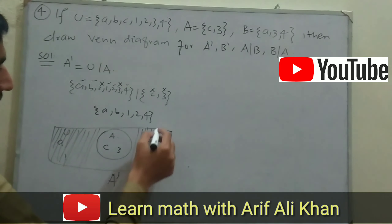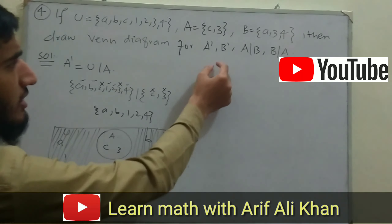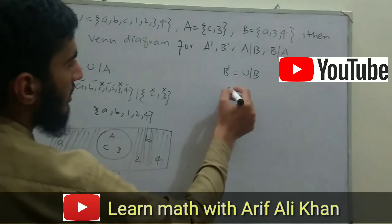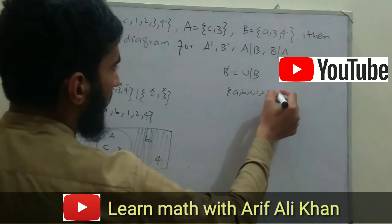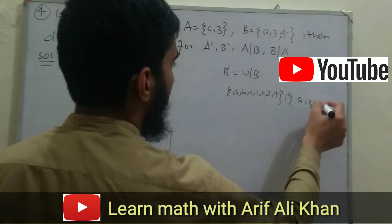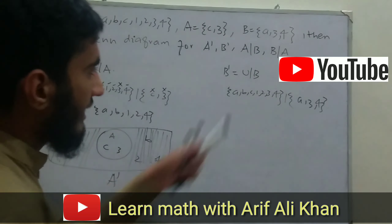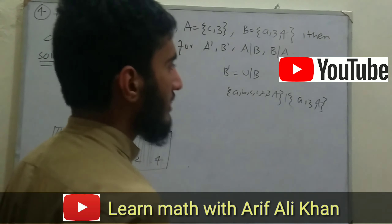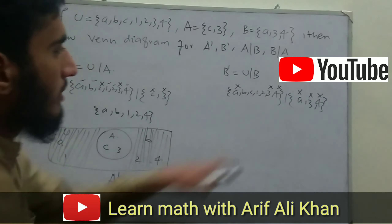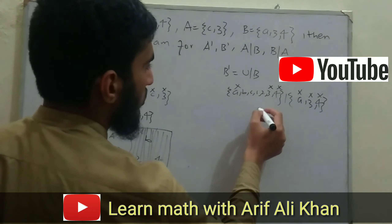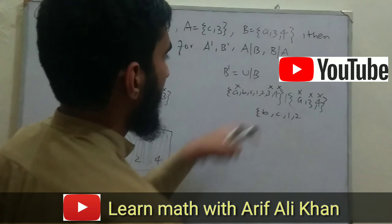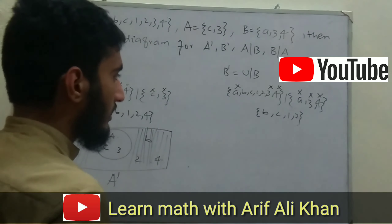Now we find B complement. B complement = U - B. Our U = {A,B,C,1,2,3,4} minus B = {A,3,4}. The common elements A and 3 are in both sets, so we ignore them. The elements remaining in U that are not in B give us B complement = {B, C, 1, 2}.